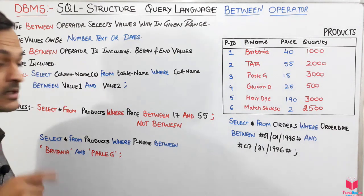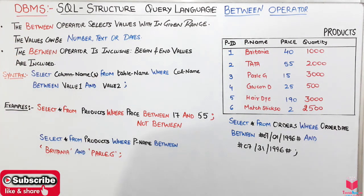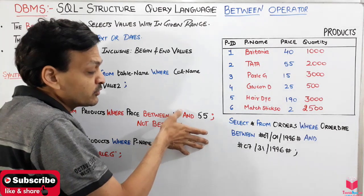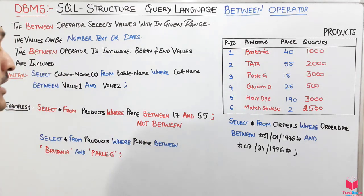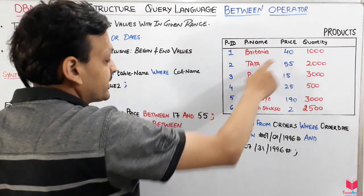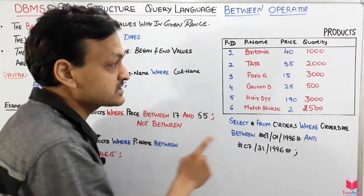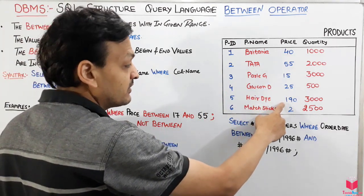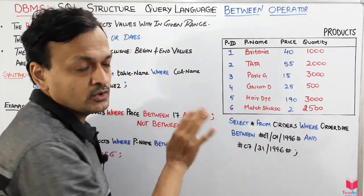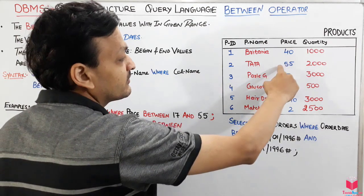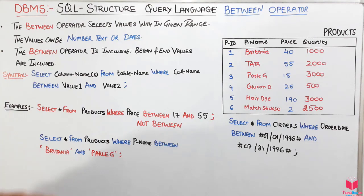For example: SELECT * FROM product WHERE price BETWEEN 17 AND 55. That means 17 is also included, 55 is also included, and values between them as well. So price 40 — yes, 55 — yes, 25 — yes, but 190 — no, 2 — no. So 40, 55, and 25 will be the output tuples.